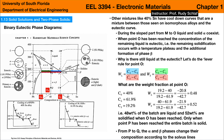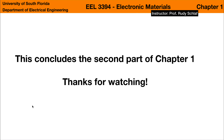Point P is just below the eutectic temperature line where the entire batch finally solidifies. After P, cooling down to Q, exactly the same happens as in the eutectic mixture: alpha and beta phases change their compositions because solubility changes with temperature. This concludes the second part of Chapter 1. Thanks for watching.